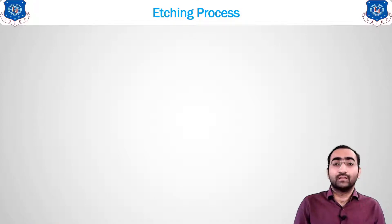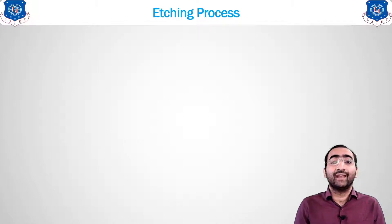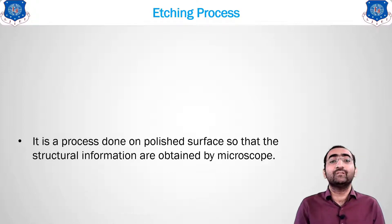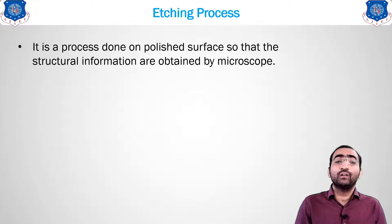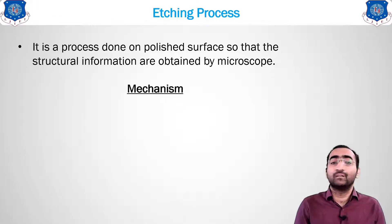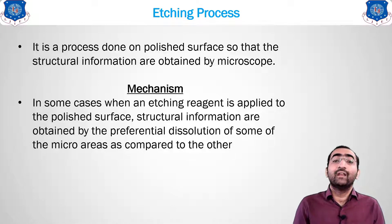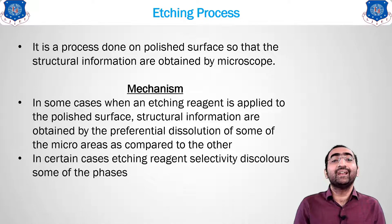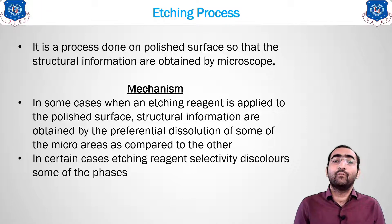Today we start with the etching process. After application of the etchant, a particular material can be visualized under the microscope — it is used to bifurcate grain boundaries from grains. The etching process is done on a polished surface to obtain structural information. The mechanism involves applying an etching reagent to the polished surface, which causes corrosion — either one phase degrades or the grain boundaries get degraded.